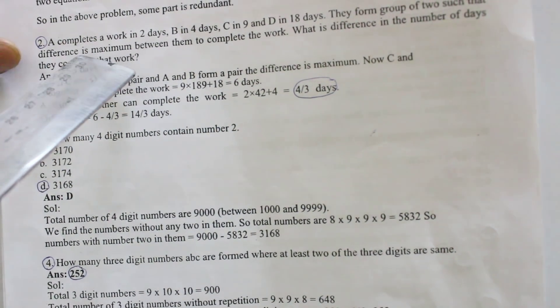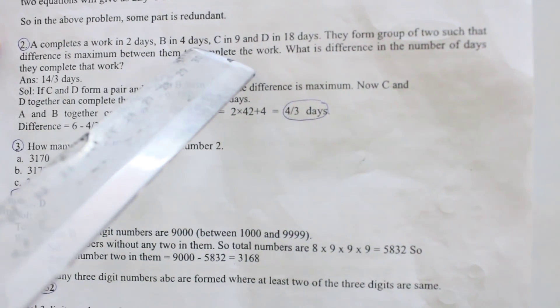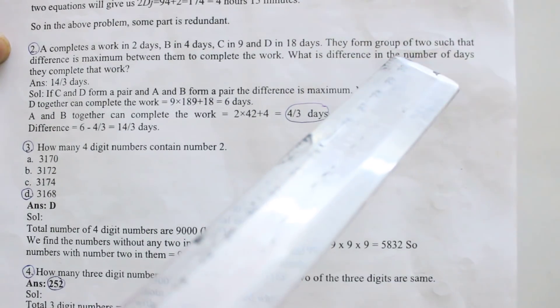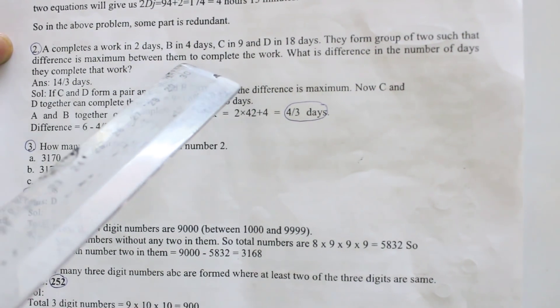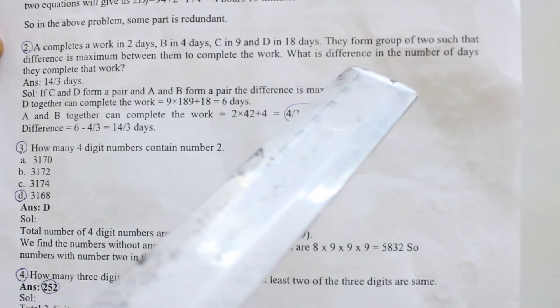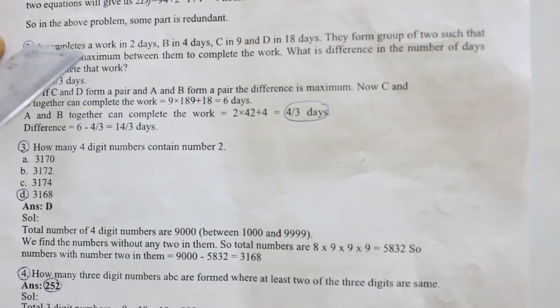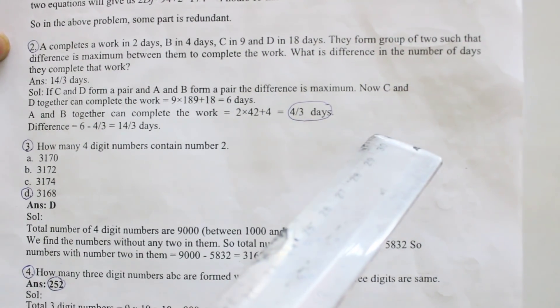Second question: A completes a work in 2 days, B in 4 days, C in 9 days, D in 18 days. They form group of 2 such that difference is maximum between them to complete the work. What is the difference in the number of days they complete the work? This question answer is 4 by 3 days, that means 1 and 1 by 3 days.